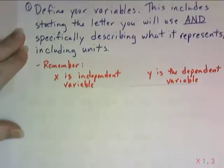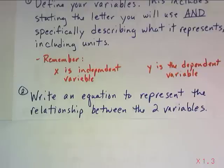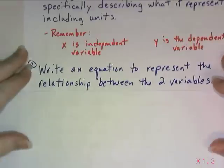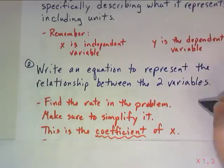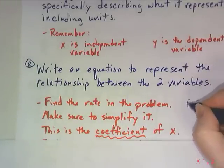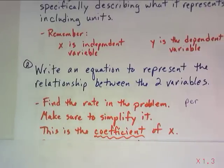After you've defined your variables, your next goal is to write an equation to represent the relationship between those two variables. Sometimes that's easier said than done, and sometimes it's really obvious from the story. If you're not exactly sure how to write the equation, look for the things we know are important parts of the equation. Try to find the rate in the problem — that might happen if you see the word 'per,' as in price per pound or miles per gallon. You might also see a monthly or weekly fee, something that happens every month or every week — that is a rate.